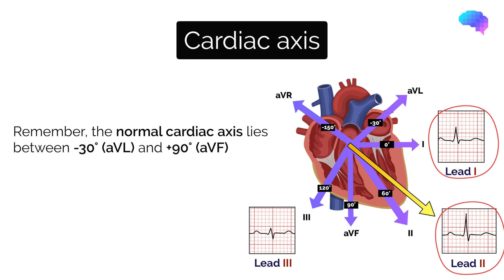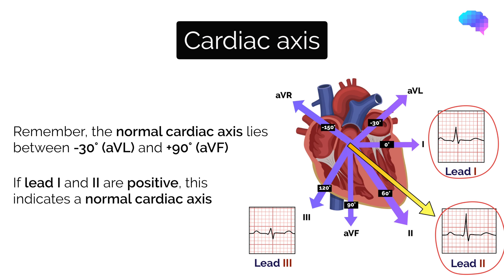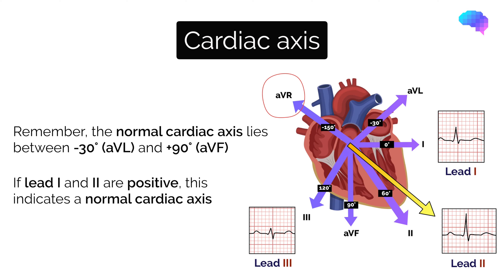These are the leads you should pay the closest attention to, as if these are both positive, the cardiac axis is normal. Lead 3 may be slightly positive, isoelectric, or rarely ever so slightly negative. You would expect to see the most negative deflection in AVR, due to AVR looking at the heart in the opposite direction.